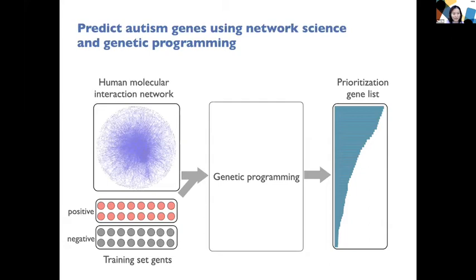We designed a genetic programming algorithm to make predictions or classifications using the positive and negative gene sets. Once we have trained GP models, we can rank all the genes in the network based on how much they are associated with autism. In the end, we'll have a prioritized gene list.